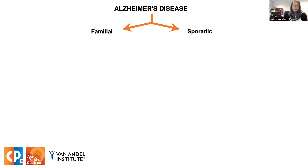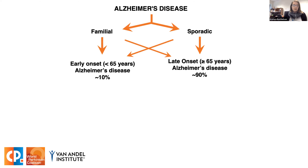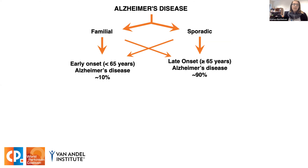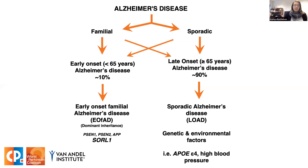There are two broad subtypes of Alzheimer's, classified based on whether it runs in families or arises sporadically, and further divided by early or late disease onset. The majority of cases show late onset after 65 years of age and arise sporadically with no distinct cause, likely involving a complex interaction of genetic and environmental factors. In rare cases, it can arise much earlier in life due to dominant mutations in a small number of genes — this is called early onset familial Alzheimer's disease, or EOFAD.